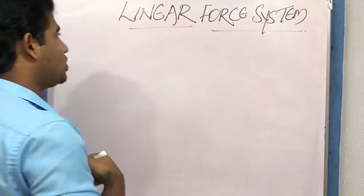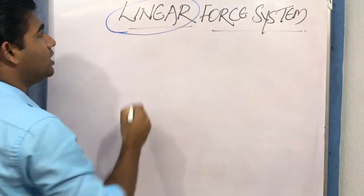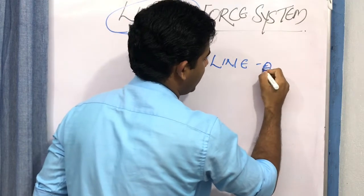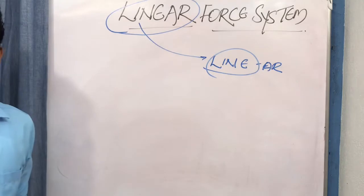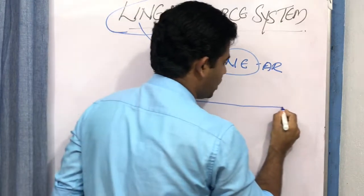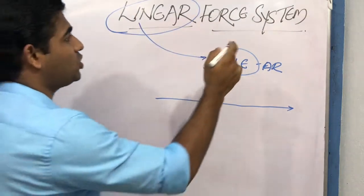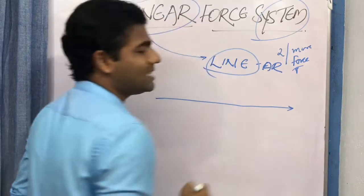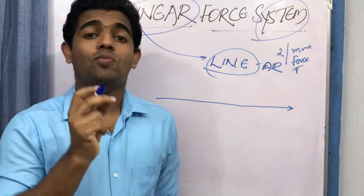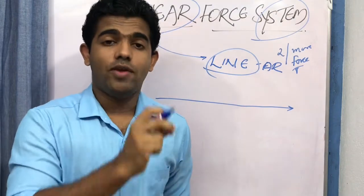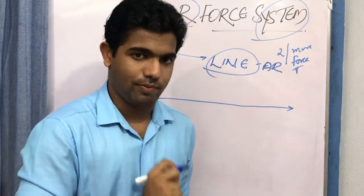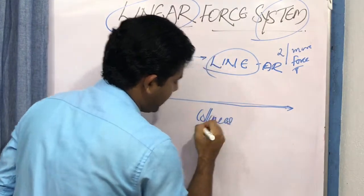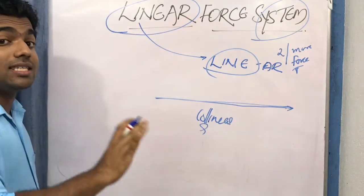About the linear force system — pay attention to the term 'linear.' From the word linear you can correlate the term 'line,' meaning something referred to as linear will be in a line. A force system means two or more forces. So the scenario here is when two or more forces act on the same segment.